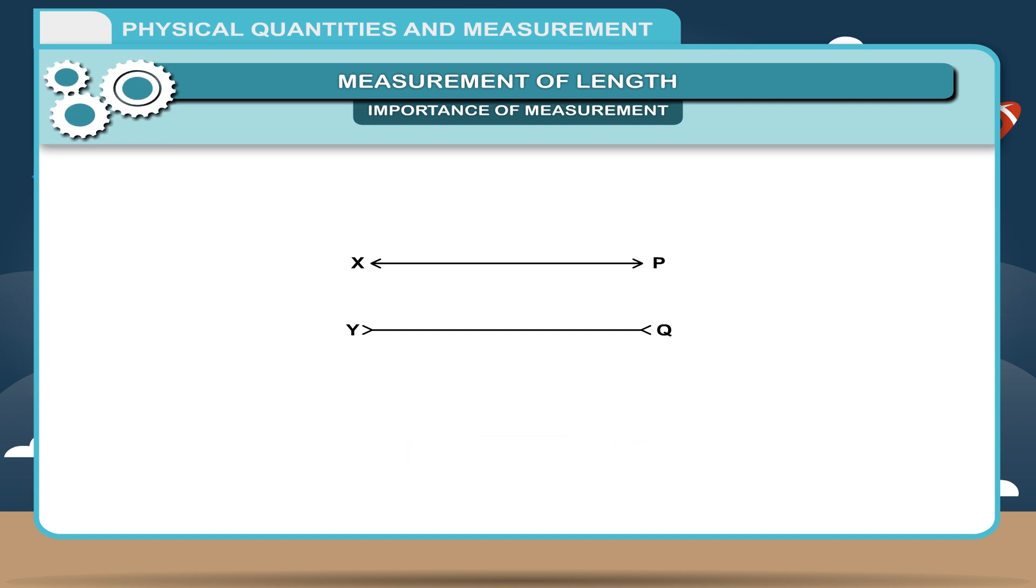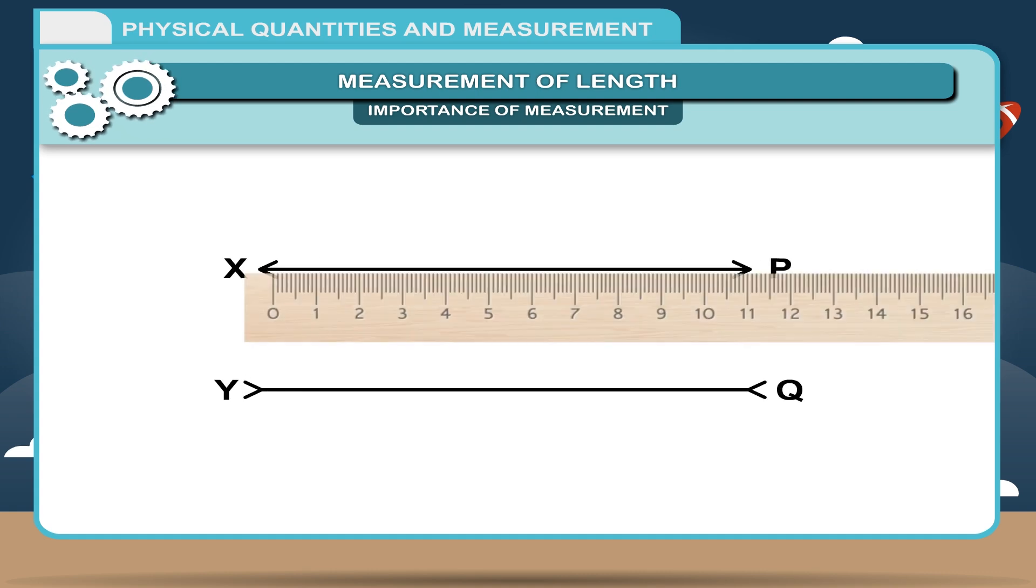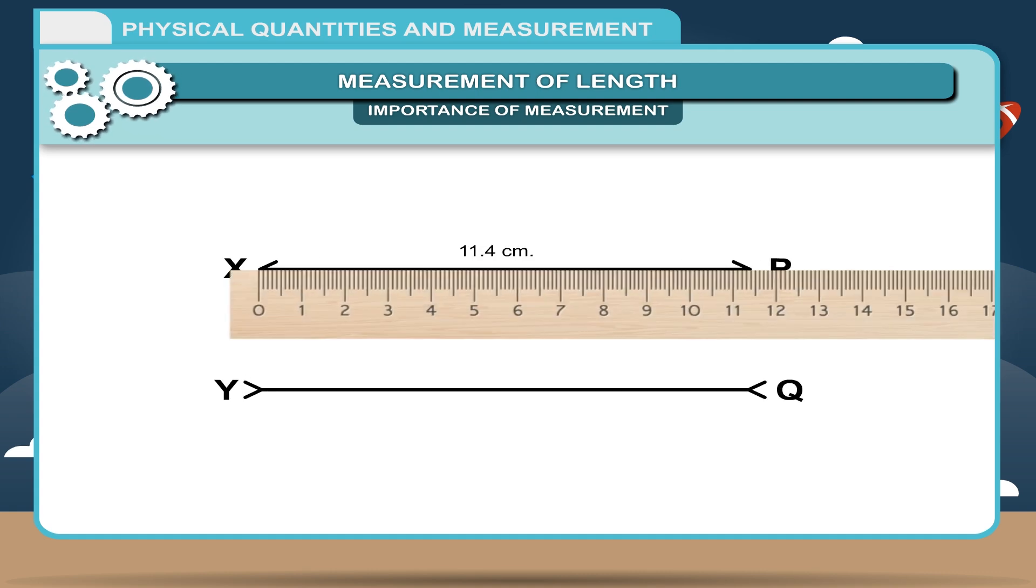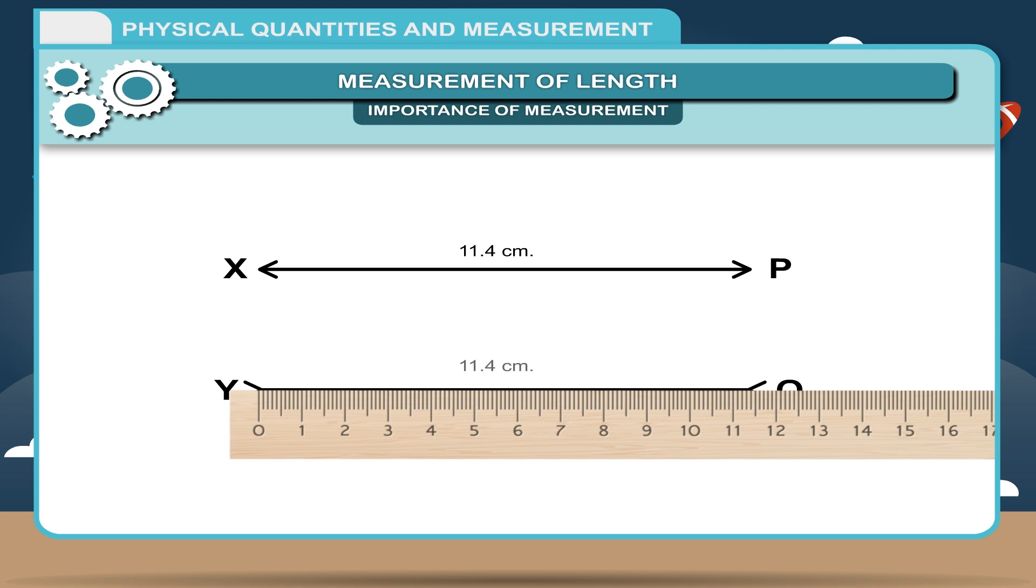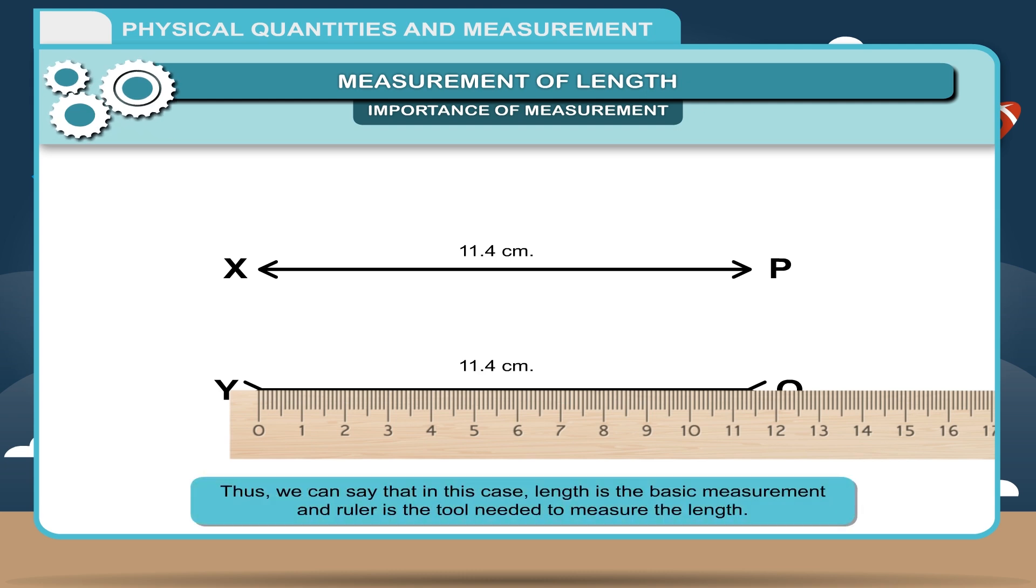You may guess that YQ appears to be shorter than XP. But when you measure with the help of a ruler, you find that both the lines are equal in length. Thus, we can say that in this case, length is the basic measurement and ruler is the tool needed to measure the length.